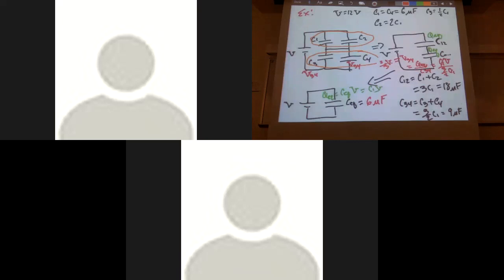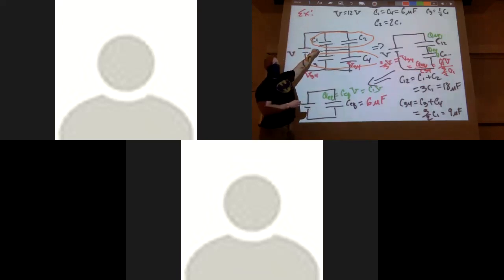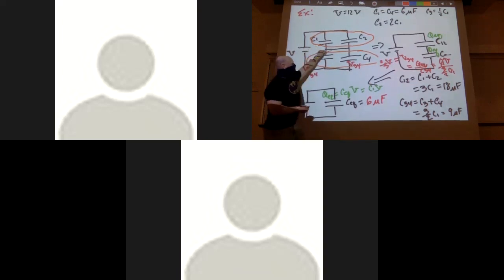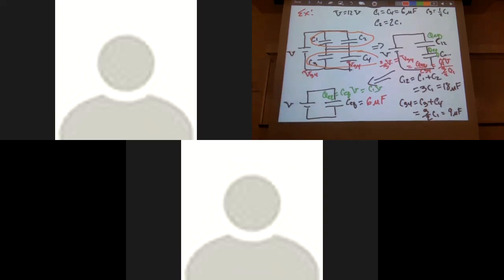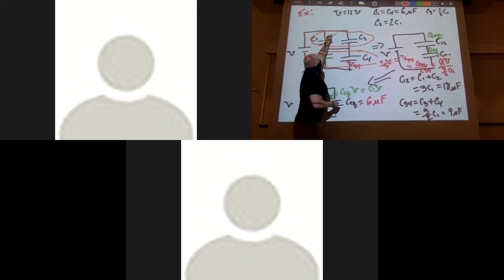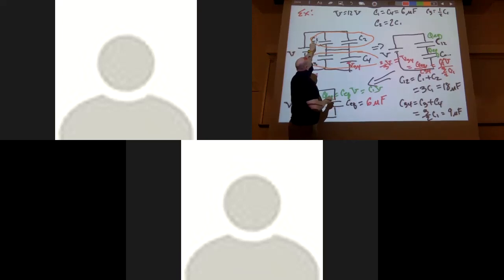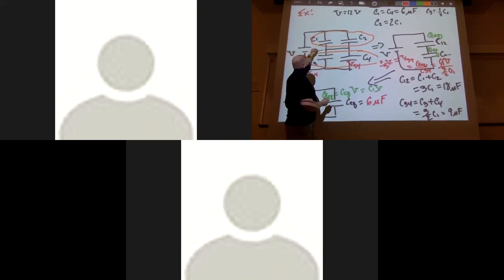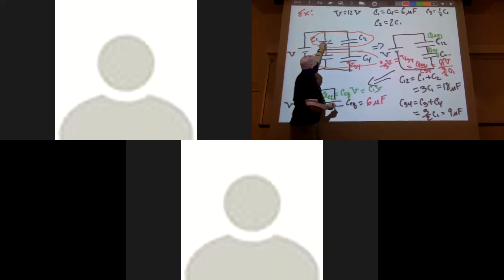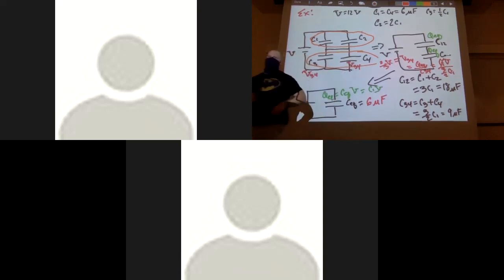A student asks if it would work to start with C1 and C3 in series. No — C1 and C3 cannot be in series because of the node between them. The presence of that node forces charge to split, so C1 and C3 cannot be treated as in series. Similarly, C1 cannot be said to be in parallel with C3 because there's no direct line connecting them. The node structure determines which elements are in series and which are in parallel.